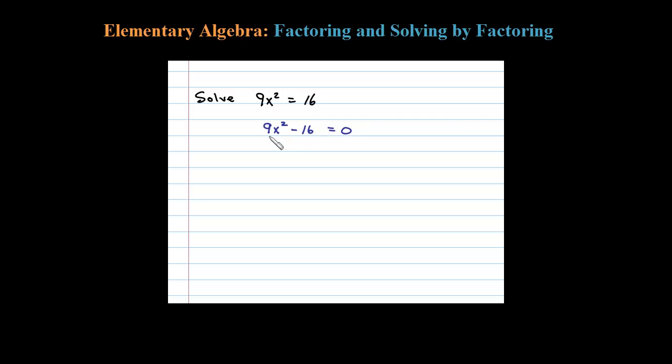I notice this is difference of two squares, where a is 3x and B is 4. So a plus B times a minus B—factor that using difference of squares. Now we're going to use a zero property and set each factor equal to 0.